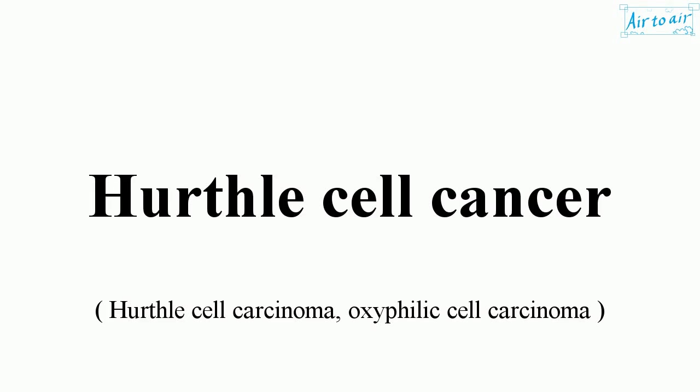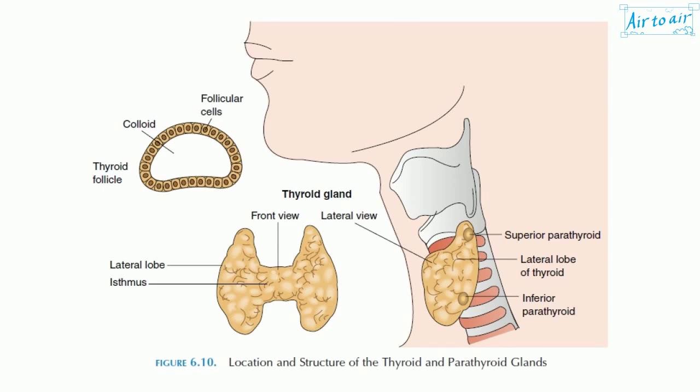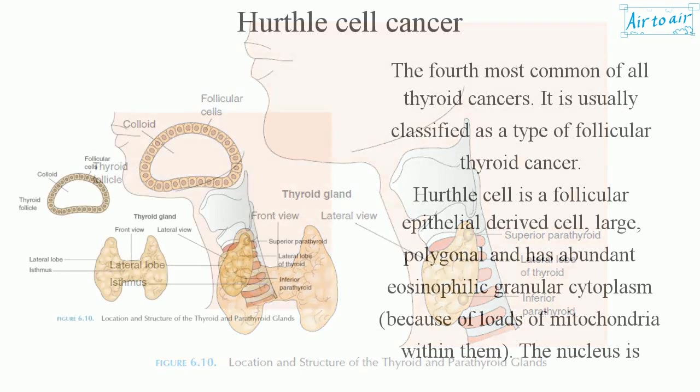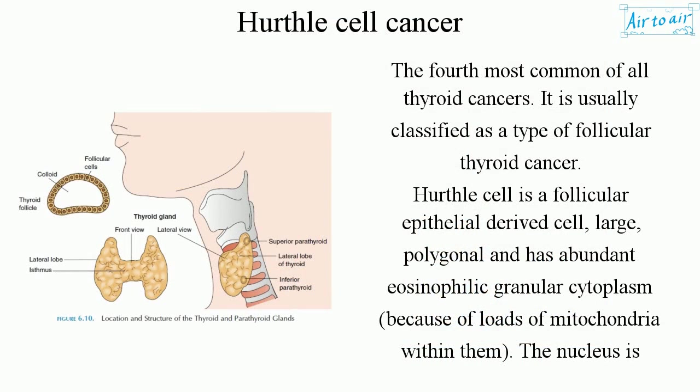Hürthle cell cancer. The fourth most common of all thyroid cancers. It is usually classified as a type of follicular thyroid cancer.